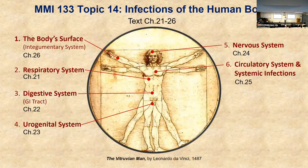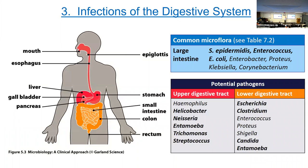Now let's talk about the digestive system. There are quite a few organisms that can give us digestive discomfort. Usually we're talking about food and water contaminated by feces — that's roughly 90% of cases. This includes bacteria, viruses, parasites, and things like that. I've bolded the ones we've already talked about. This mostly covers bacteria, but you can see Candida and Entamoeba, which is a protist, are on the list as well.